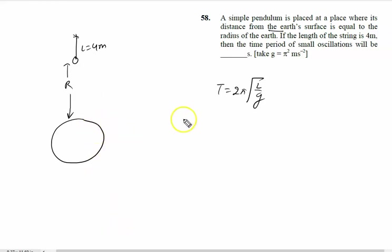At the surface of the earth, gravity is g. What is the gravity at height r? We will use the formula.